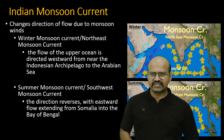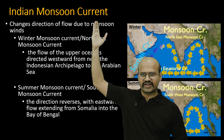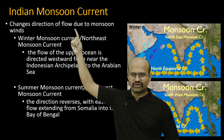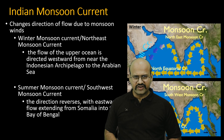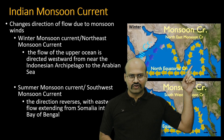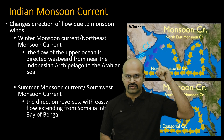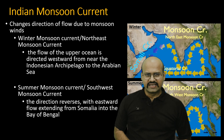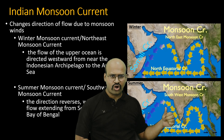In summary, the Indian monsoon current changes its direction of flow due to monsoon winds — it flows anti-clockwise in winter while in summer it flows clockwise.